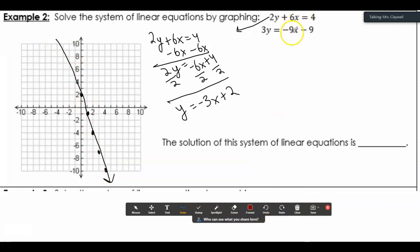I'll do this other line in a different color. I just need to divide everything by a 3 to get y by itself. I notice that my slopes are the same in both of these, so we'll see how that plays out.